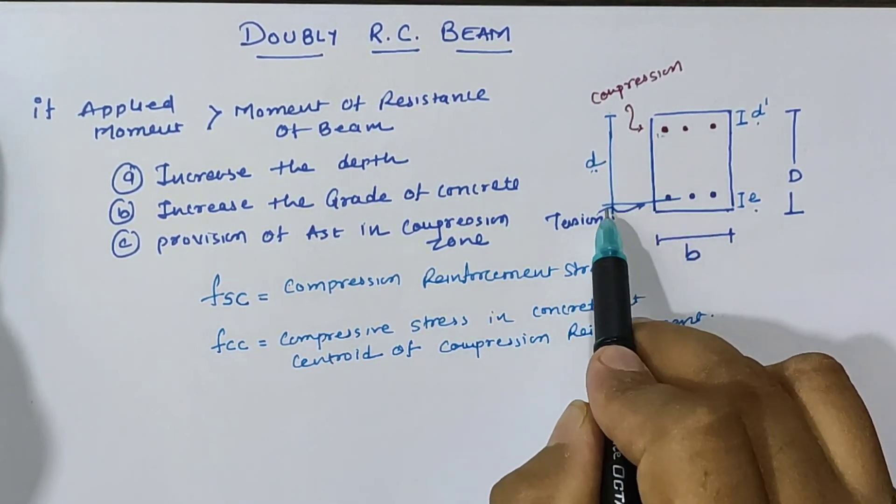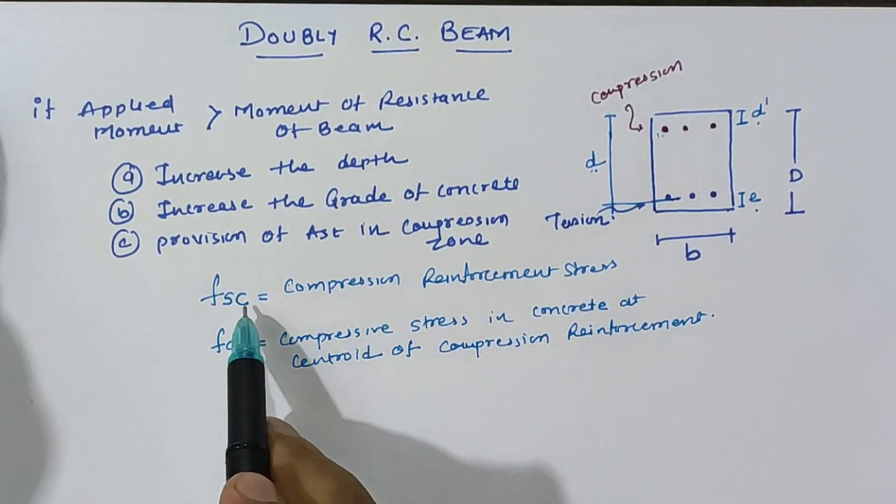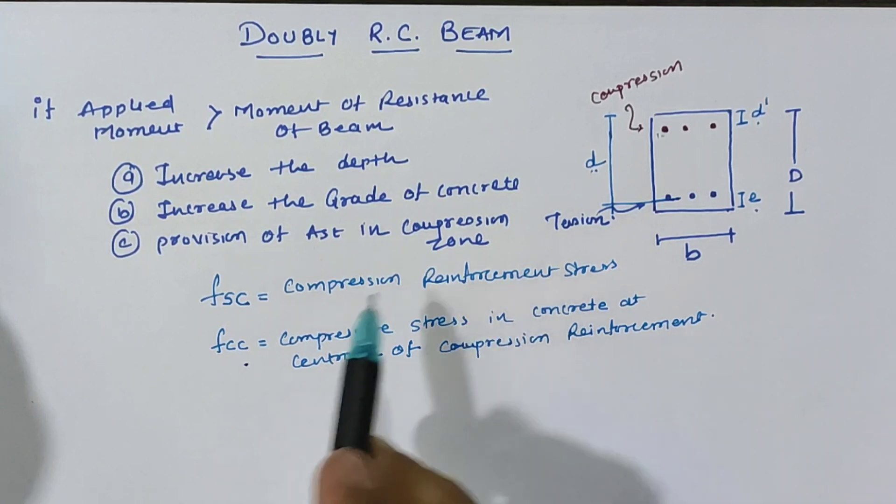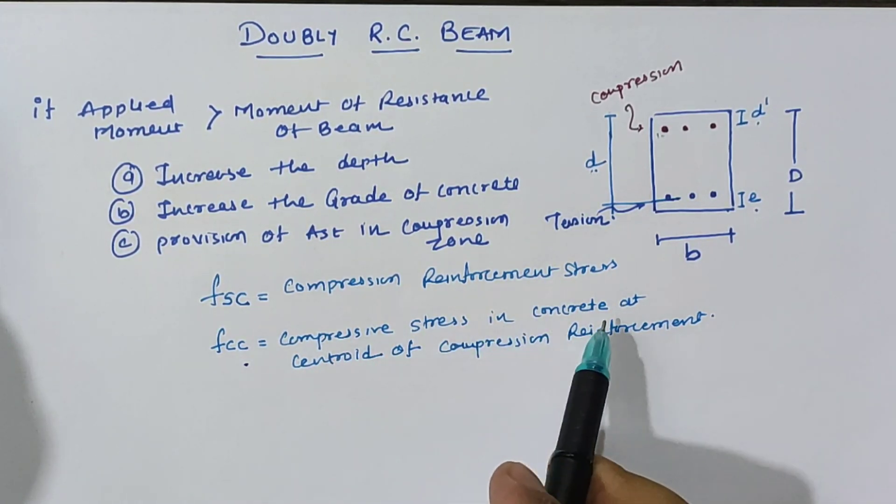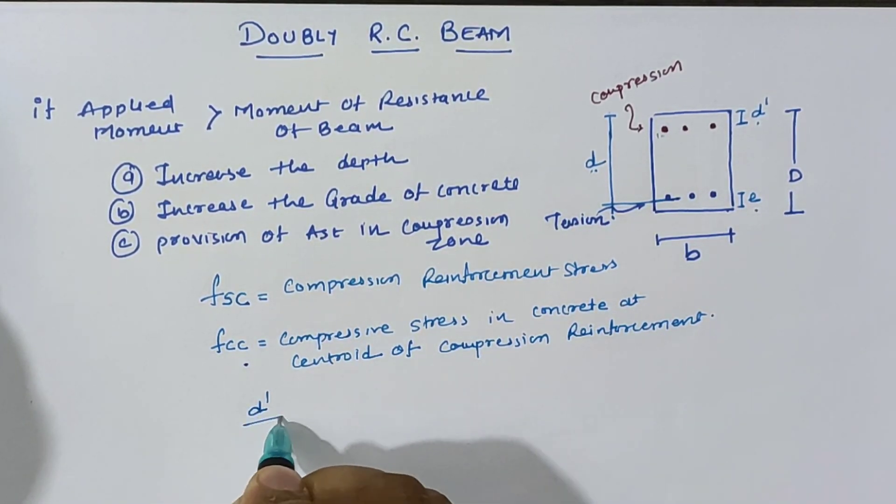We require two values: fsc and fcc, which are compression reinforcement stress and compressive stress in concrete at the center of the compression reinforcement. Both values are dependent on the value of d' by d.